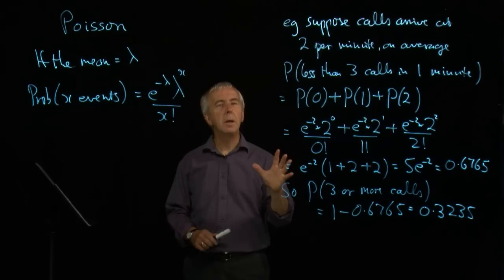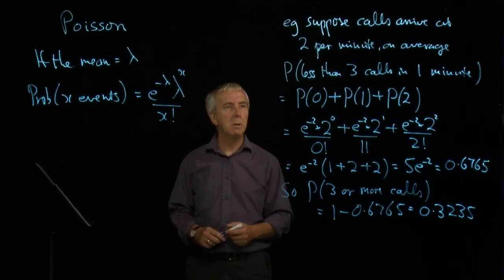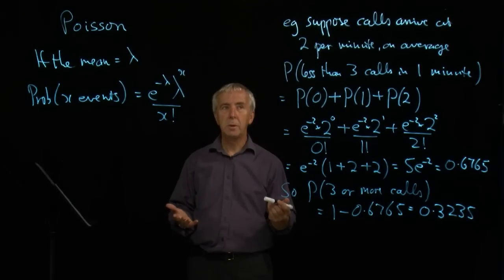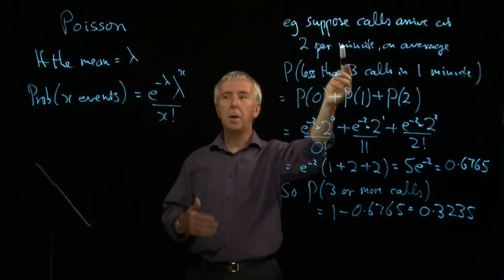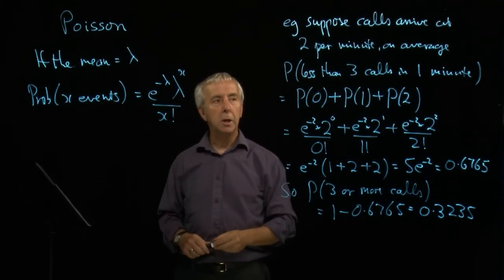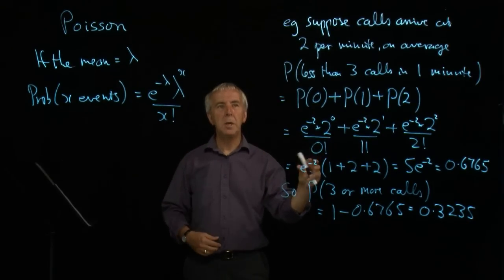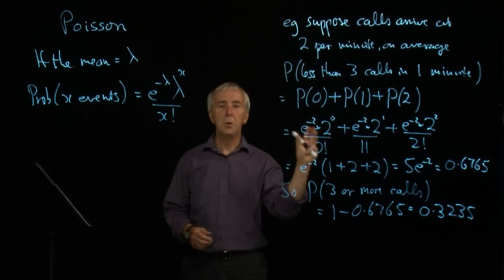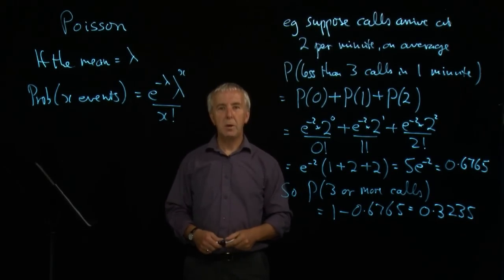It's easy to scale Poisson up. If I wanted to think about what's happening in five minute intervals, then the mean would become 10. And then I could do the whole Poisson calculation with lambda equals 10, and so on. So it adjusts very easily. Once you know what the mean is for one unit of time or unit of space, you can scale it up and then just carry on as before.